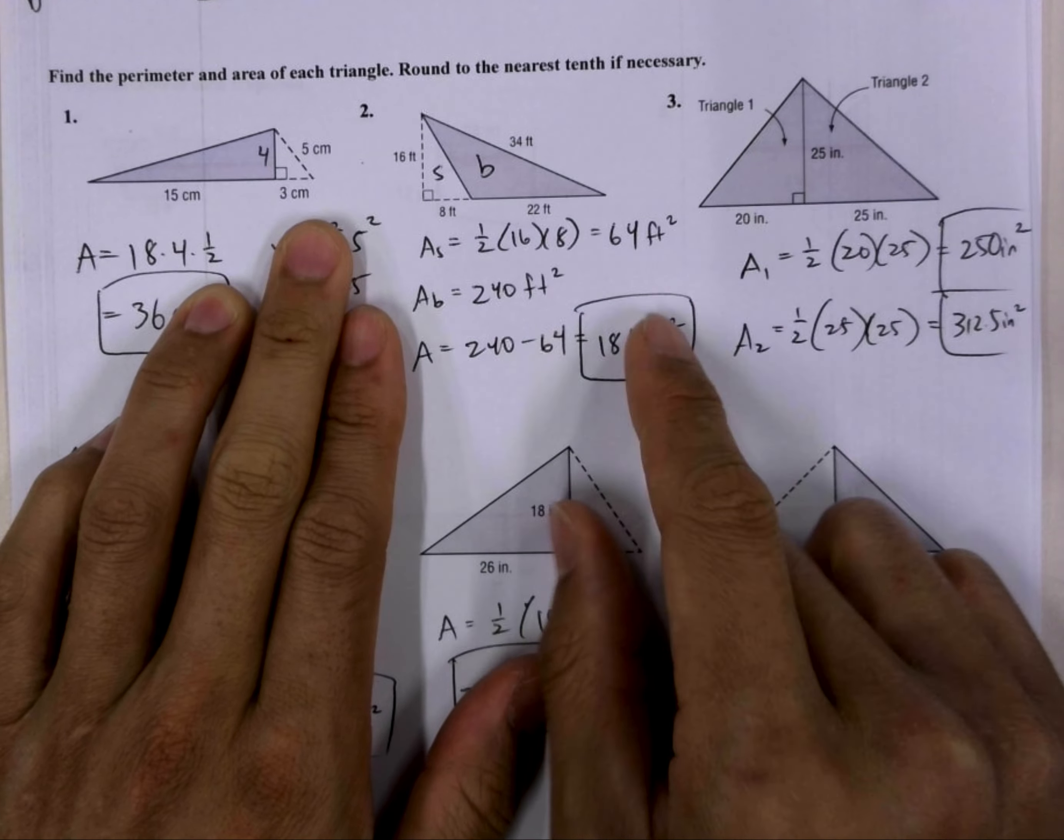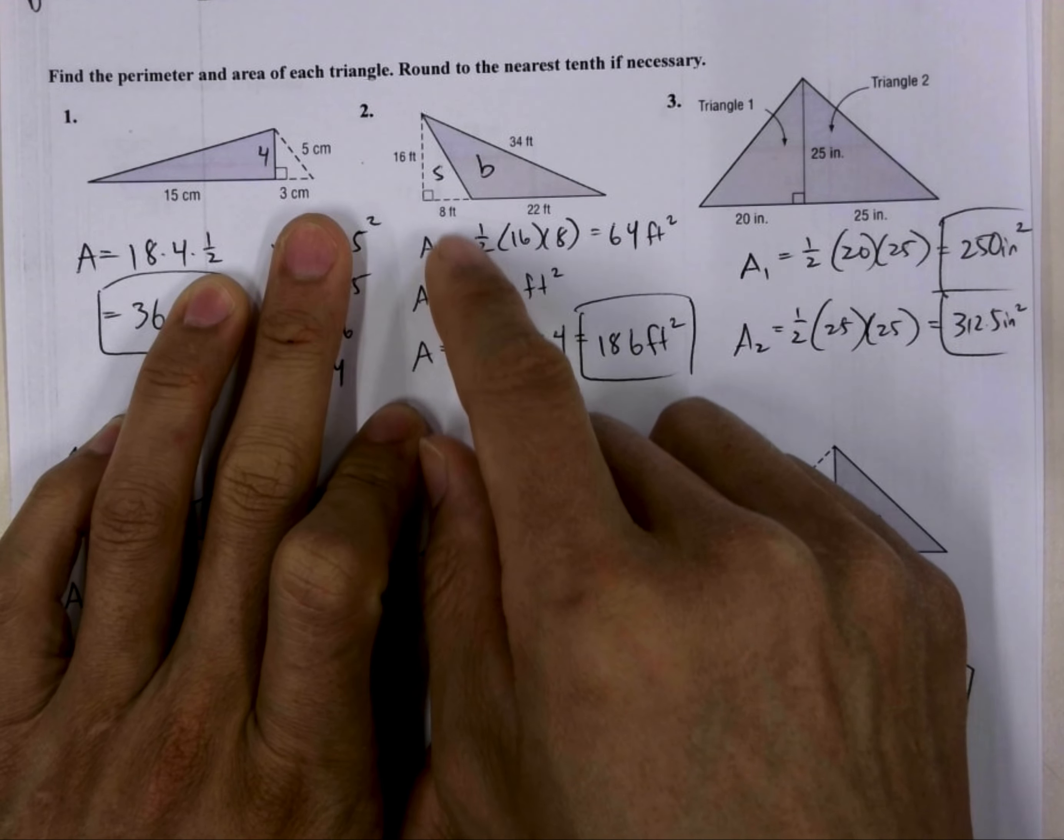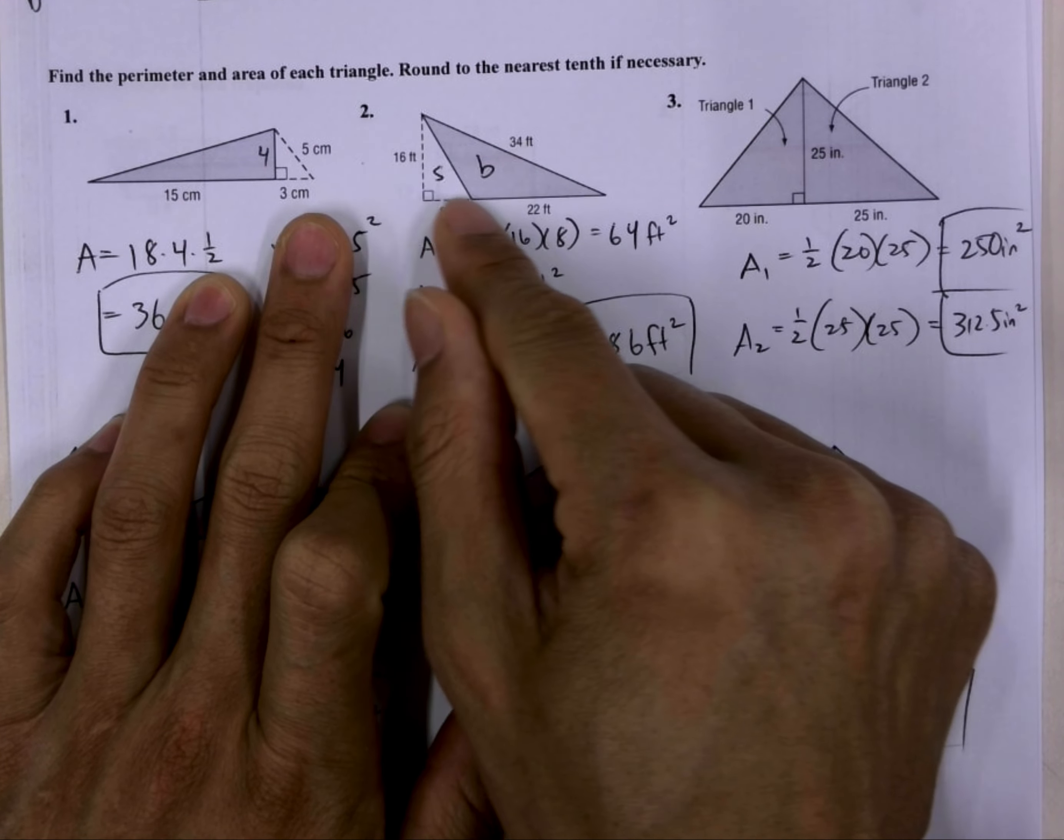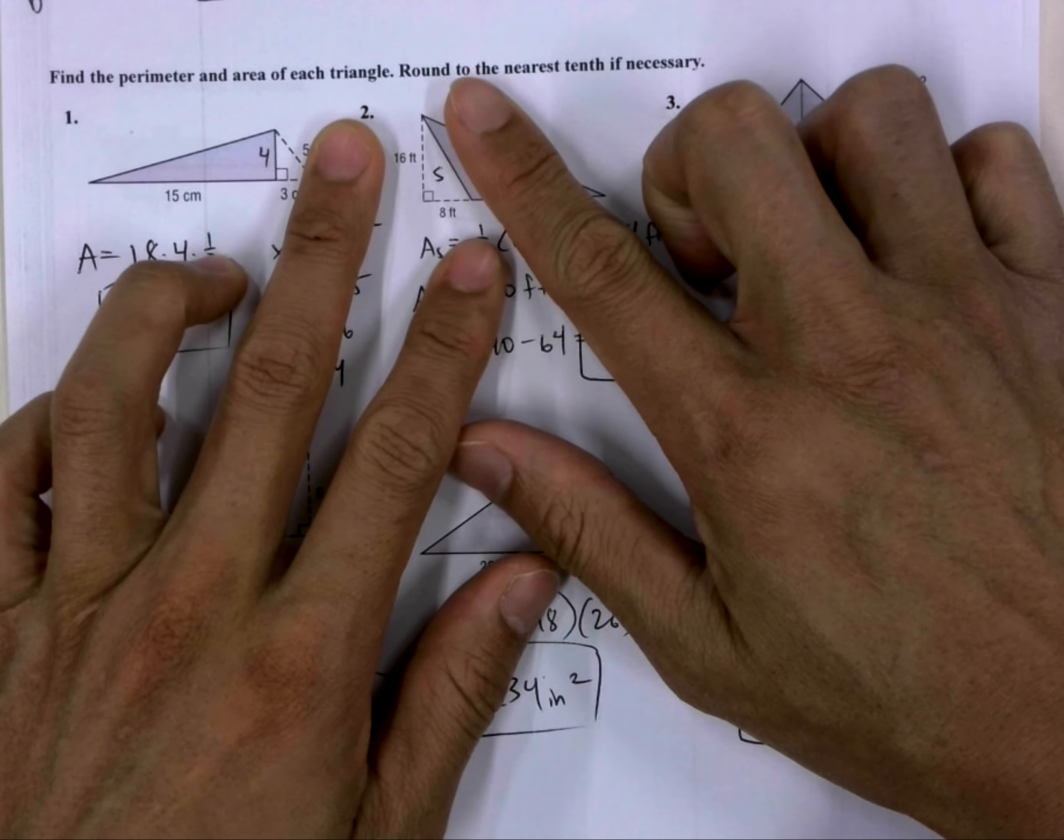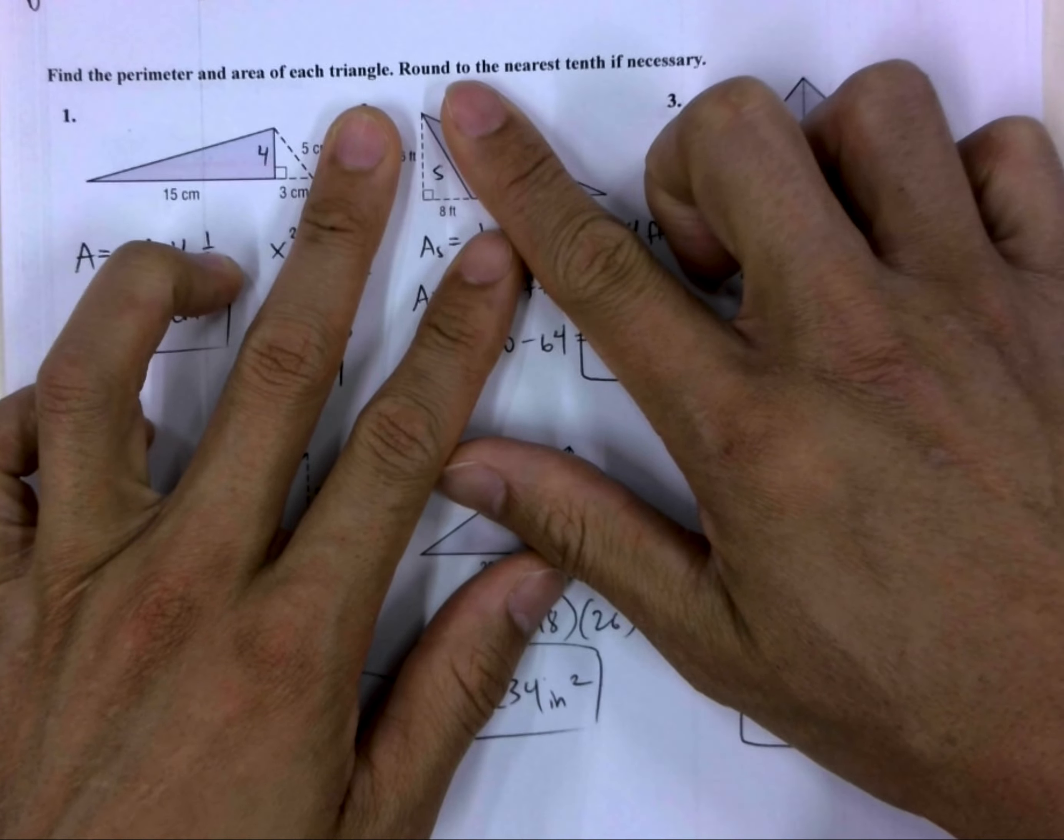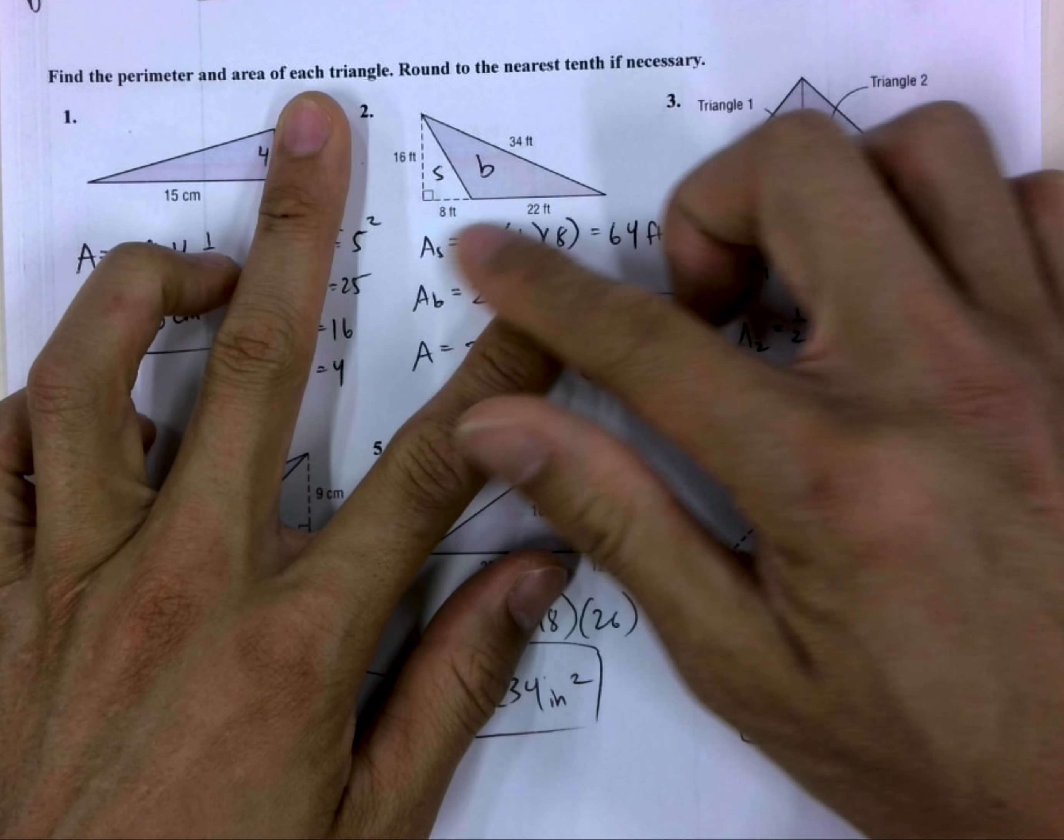This one was tricky because you needed to first get the area of the big triangle, the entire triangle, and then get the area of that smaller triangle.